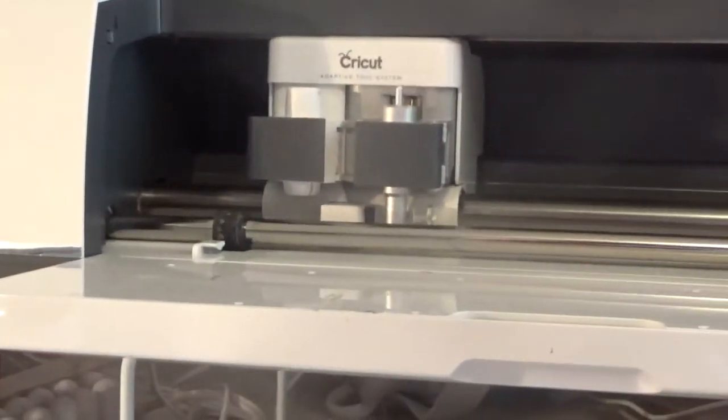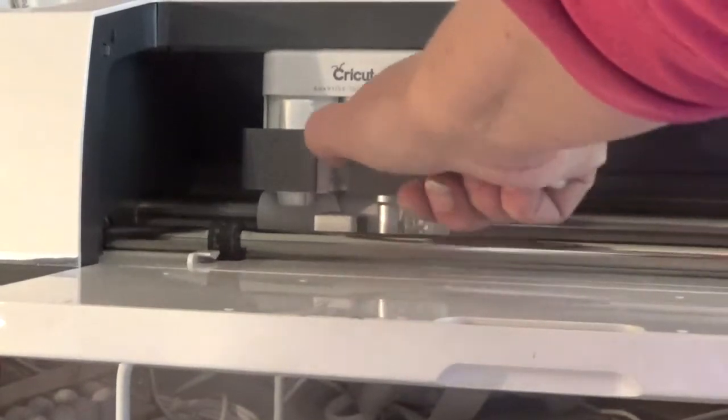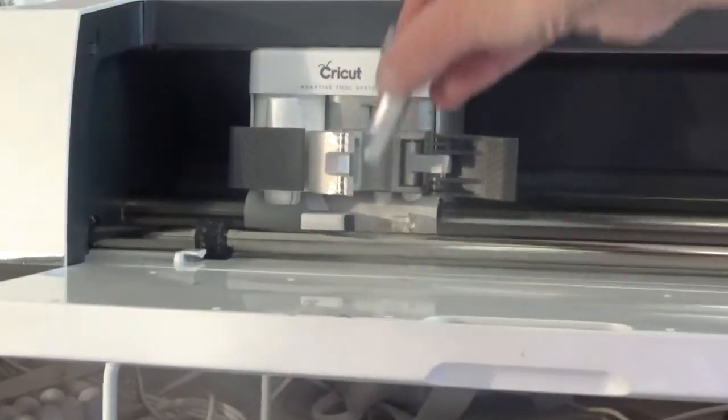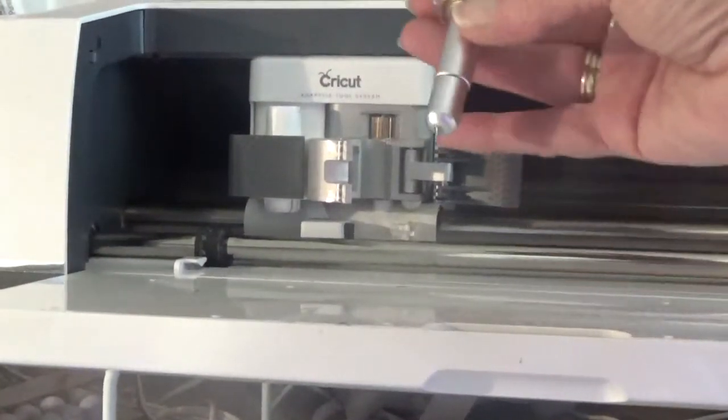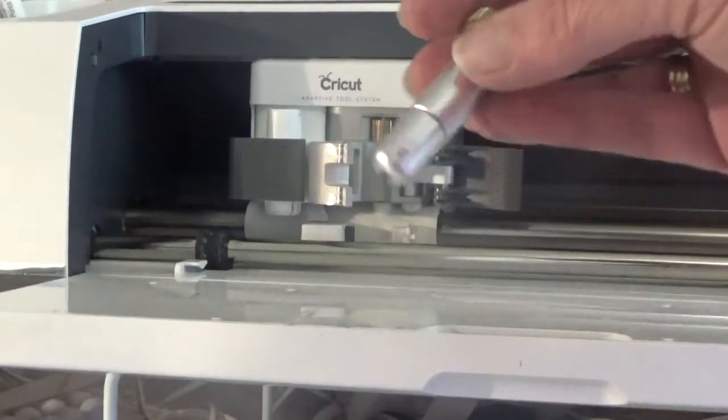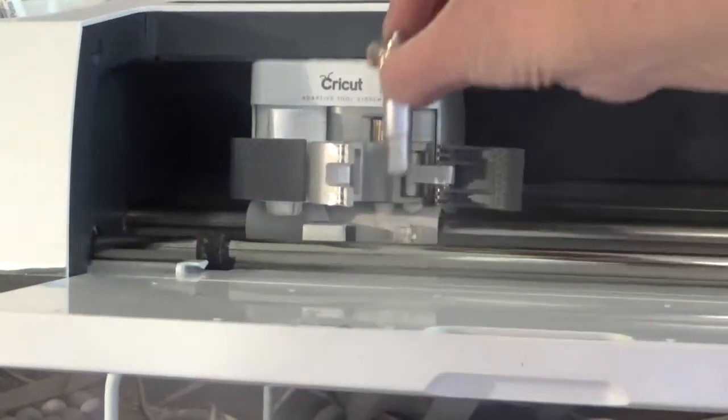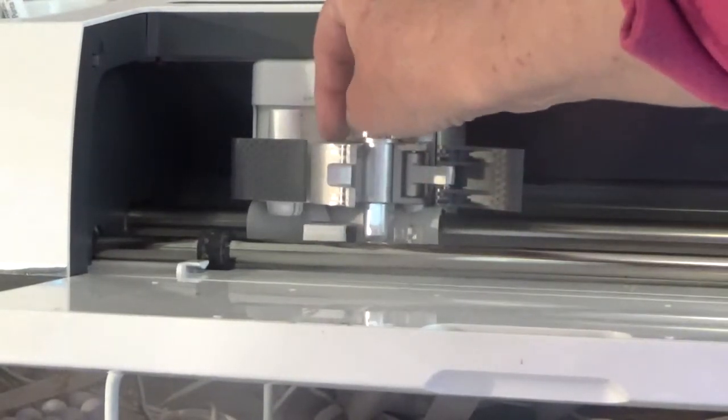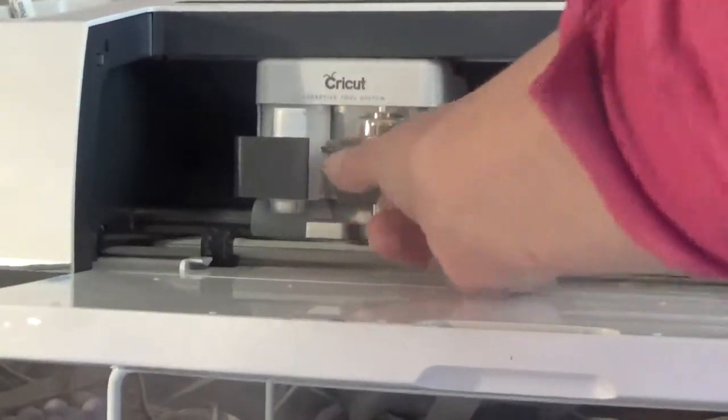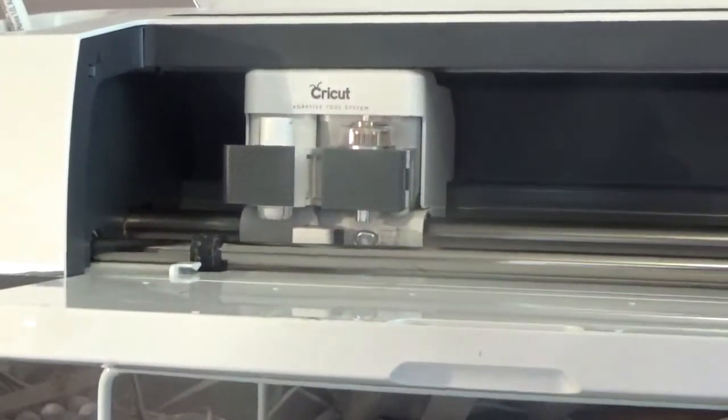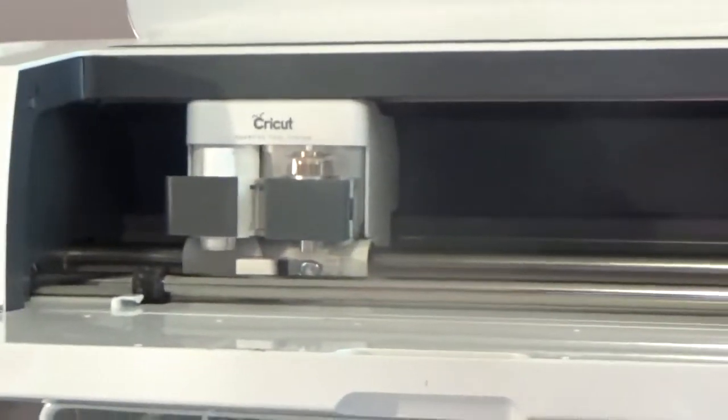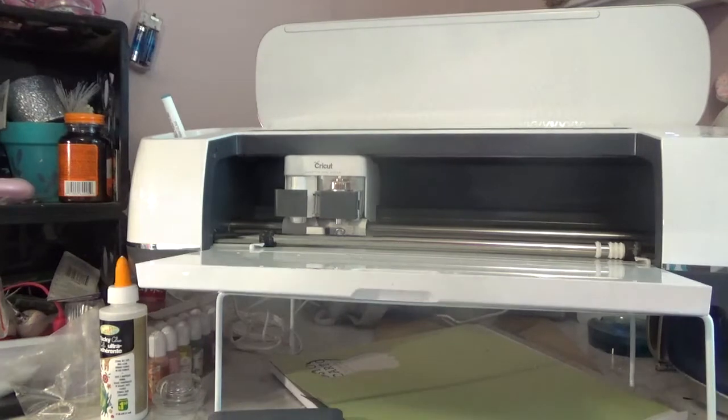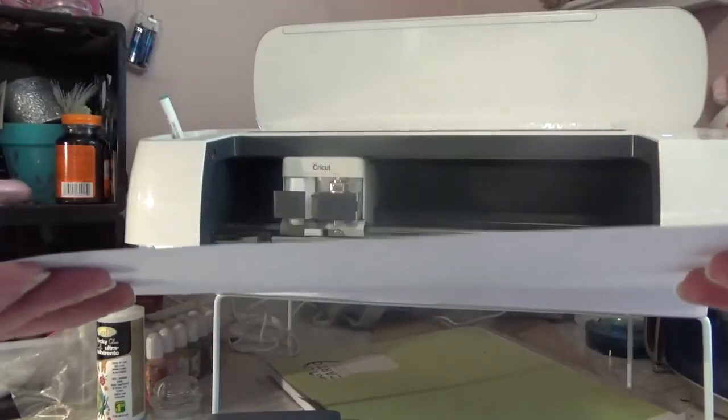I don't know if you can see that. So what we're gonna do is, as you can see this is my Maker, I am going to replace the knife blade with my engraving tip and housing. Plastic covering facing you, make sure it's down against the bar as low as you can go and lock it in place. Let me back up a bit. Okay, so we're gonna try this. We're gonna put my mat in.